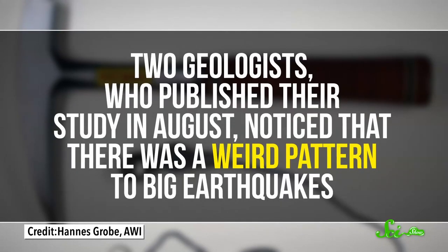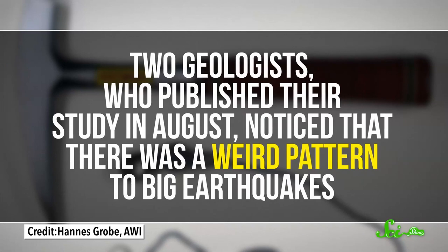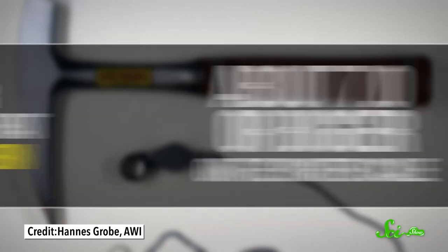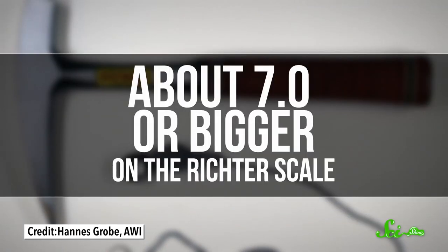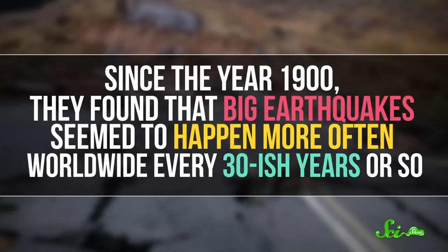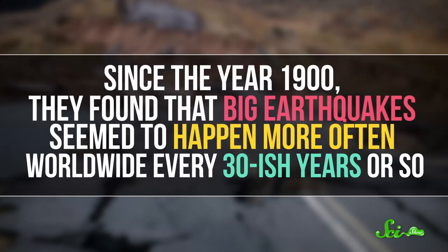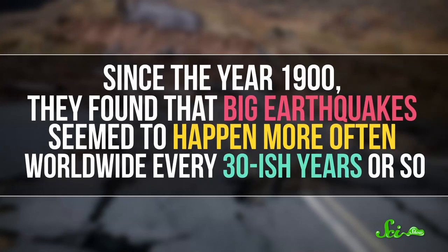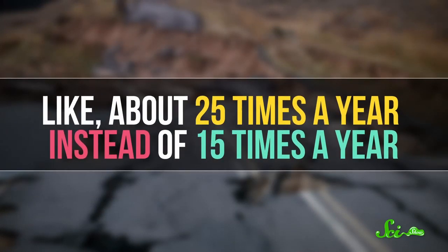Two geologists who published their study in August noticed that there was a weird pattern to big earthquakes, about 7.0 or bigger on the Richter scale. The Richter scale is the international numerical scale for how strong an earthquake is. Basically, the higher the number, the more you feel it. Since the year 1900, they've found that big earthquakes seem to happen more often worldwide every 30-ish years or so. Like about 25 times a year instead of 15 times a year.